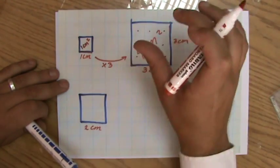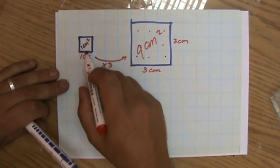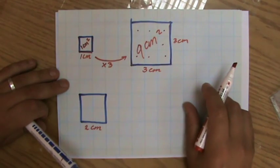So as you can see, with area and similarity, I cannot just multiply the area by the scale factor.